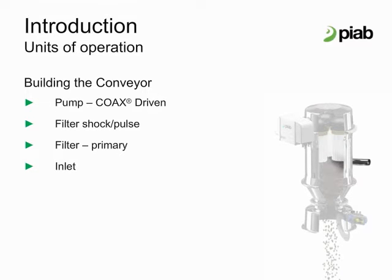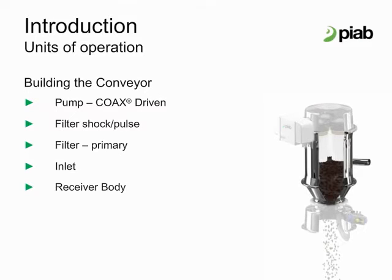Our inlet diameter can increase or decrease based on the material characteristics and the application target rate. The receiver body size is also rate dependent and bulk density dependent. For high throughput applications, we will need a lot of volume and a lot of vacuum flow. For a smaller transfer rate, we would use less volume and less flow, dependent on the product bulk density.